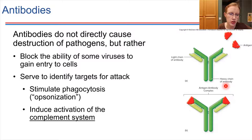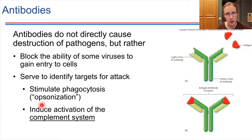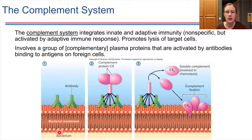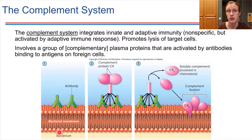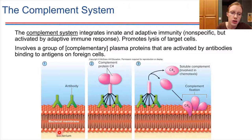Antibodies also trigger phagocytosis, and they induce the complement system. The complement system is something that bridges innate and adaptive immunity — it's triggered by antibodies, which are part of the adaptive immune response, but once that triggering happens, it's a very nonspecific process. These proteins are called complement proteins because they're complementary to what the B cells and T cells are doing. In the end, this promotes lysis of target cells.